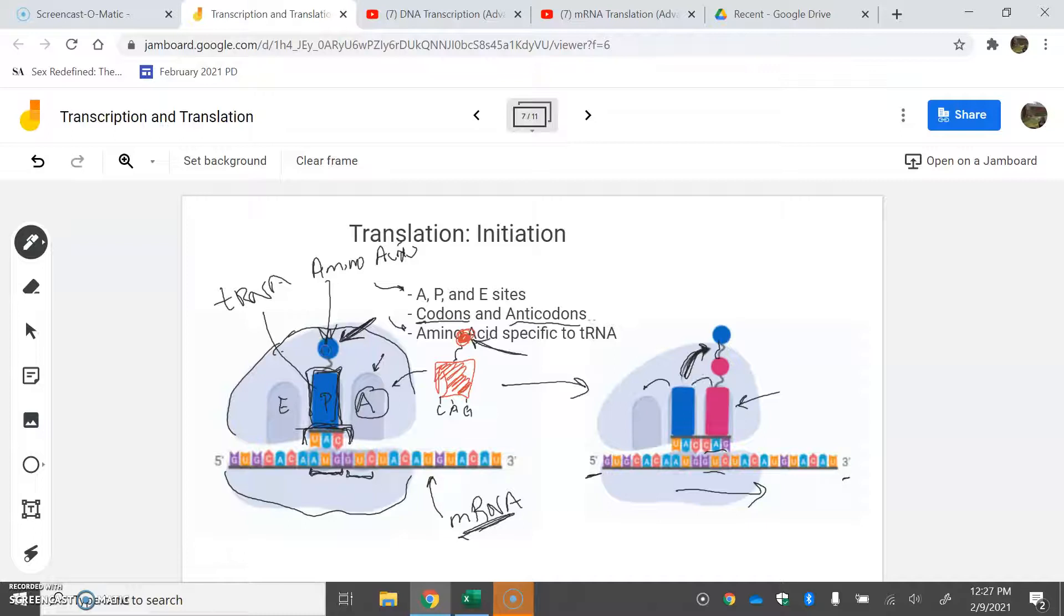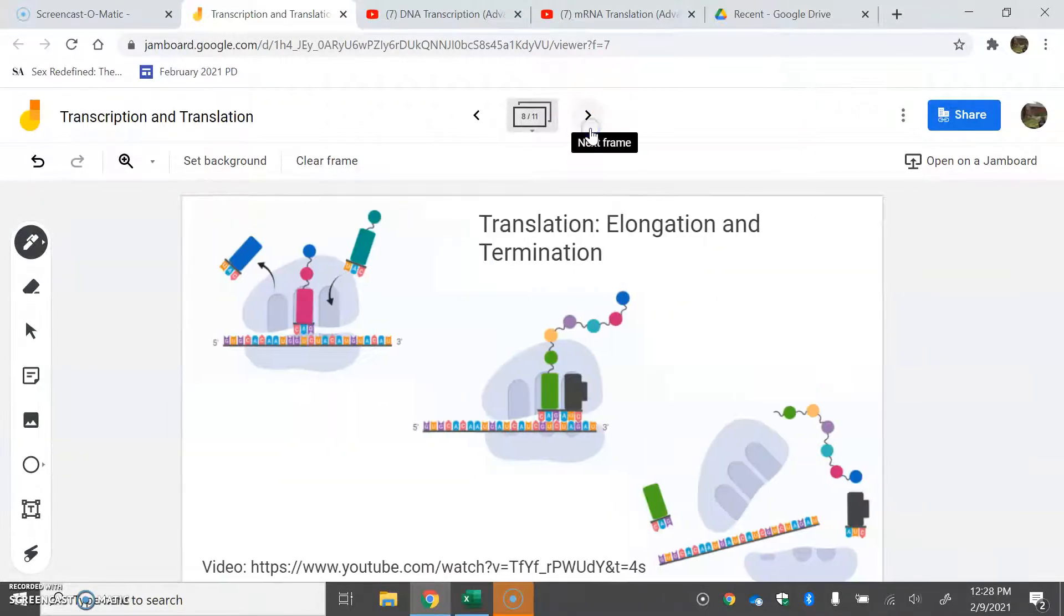Notice we're reading from 5' to 3' again. The ribosome shifts the whole thing. When the blue one goes to the E site, that's our ejection site. The blue one is now naked - it lost its amino acid, so it just floats away. It's going to go pick up another amino acid and try to return to the party as long as its anticodon matches up.